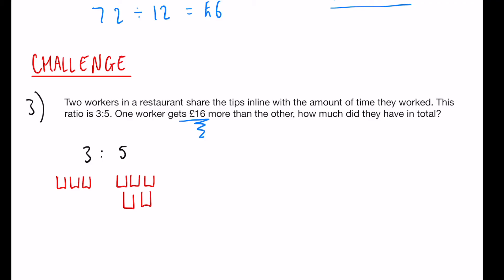The difference in the buckets is 2, so that means 2 buckets must equal £16. Therefore we can work out that 1 is equal to £8. And so we know that 3 of them would be £24.